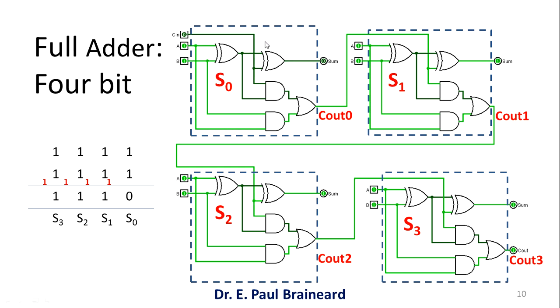this is for LSB, this is for the next bit, this is for next bit and this is for MSB. Similarly, the output from first bit addition goes as carry out to the next bit addition as input. This continues.